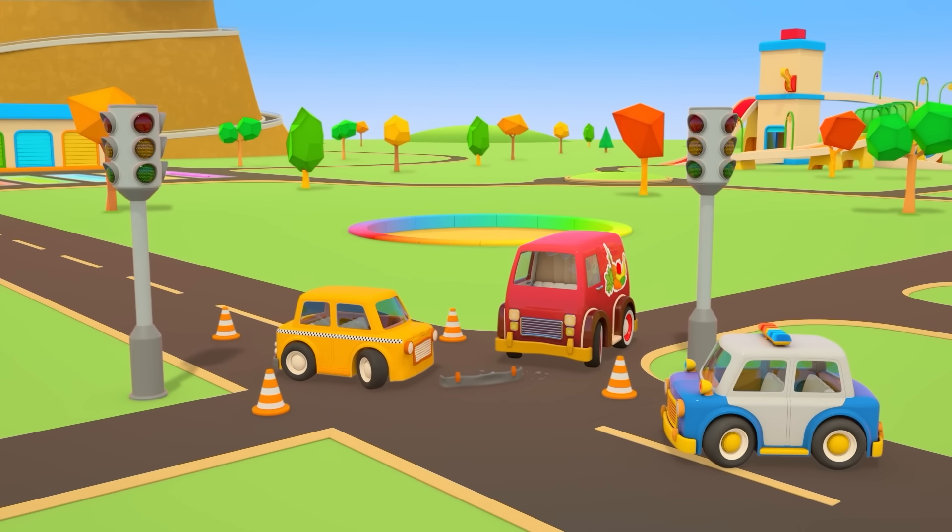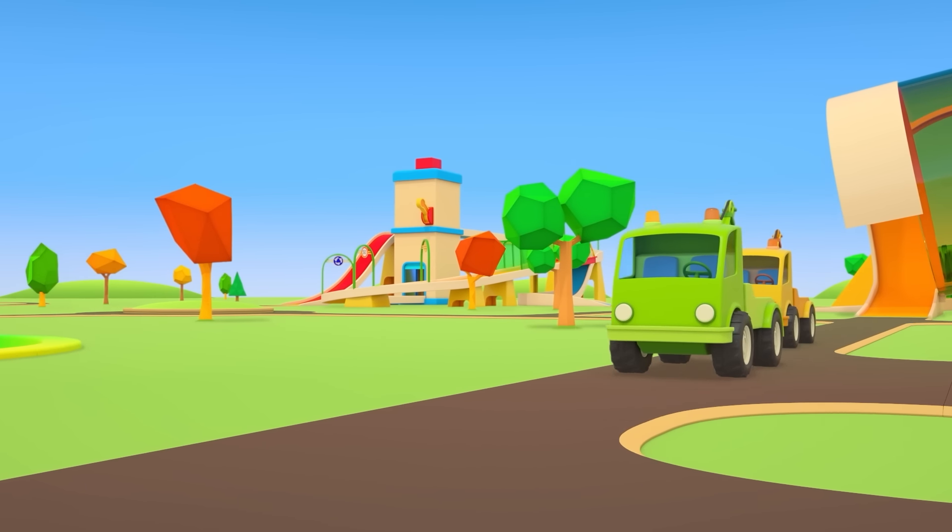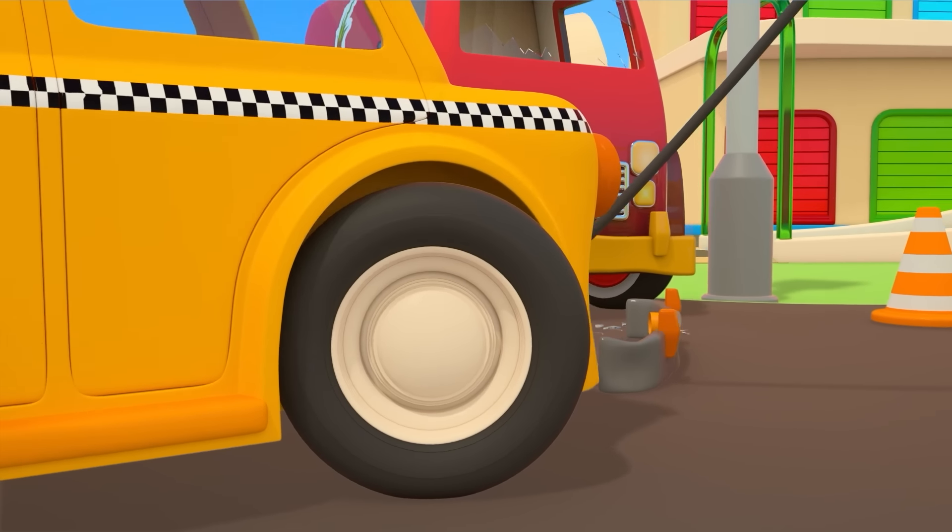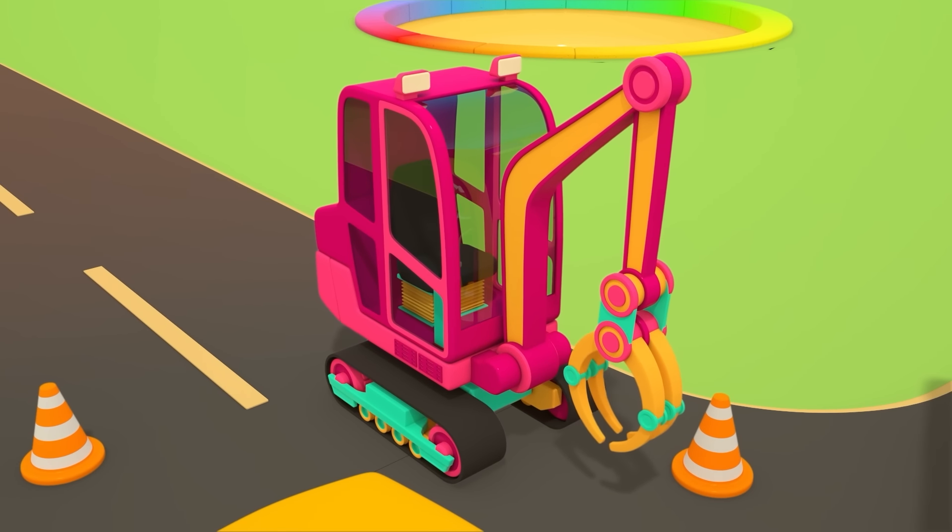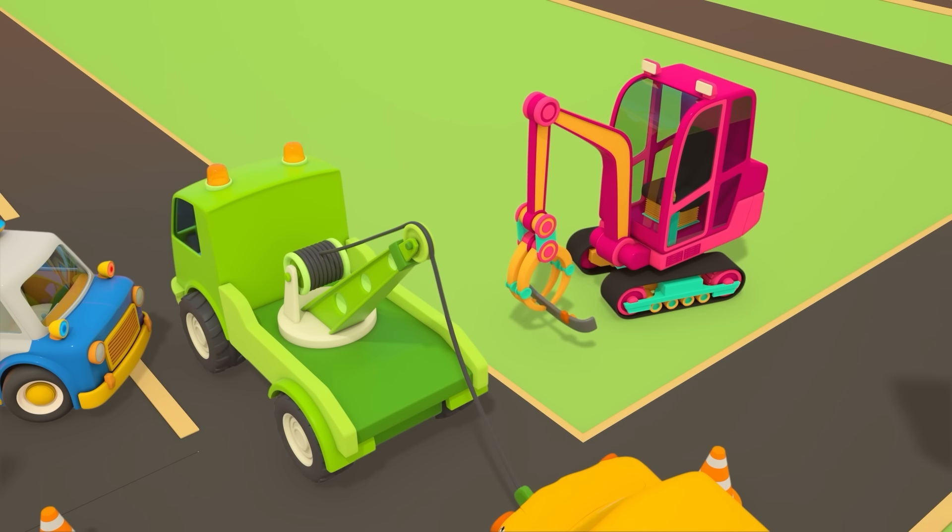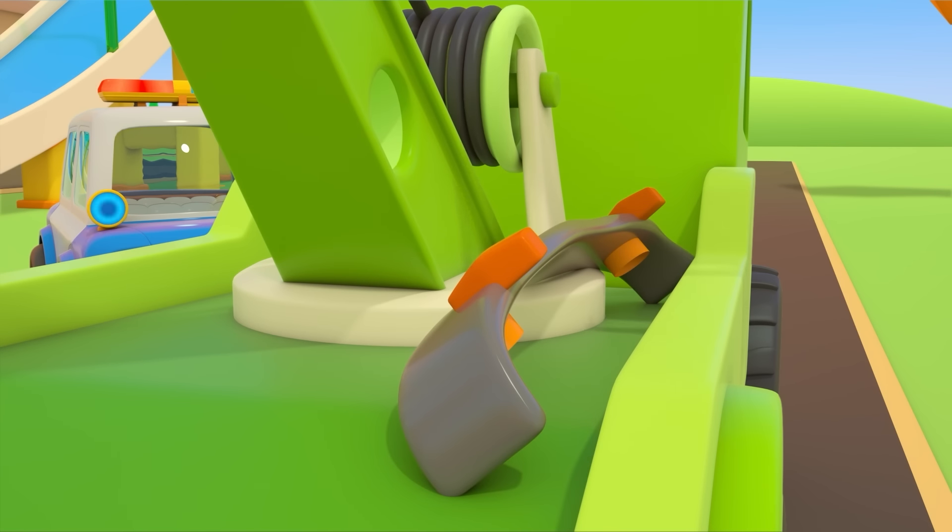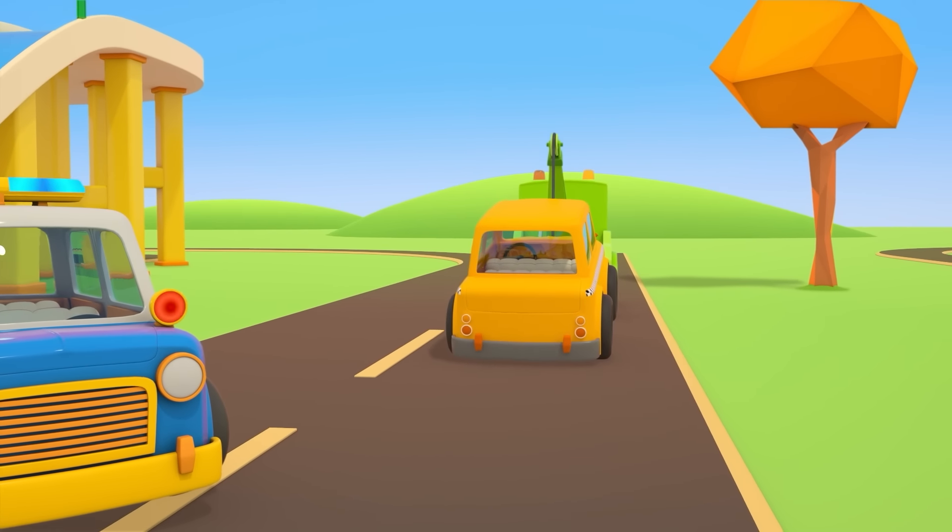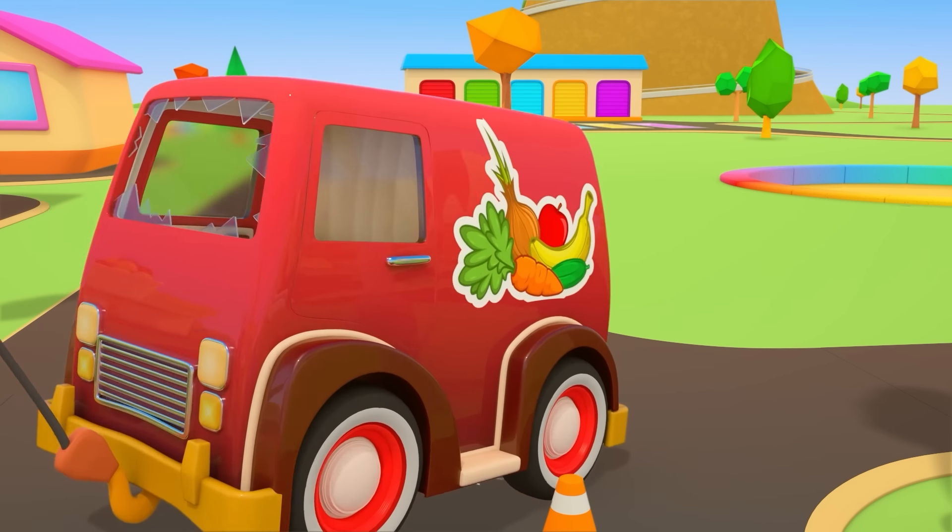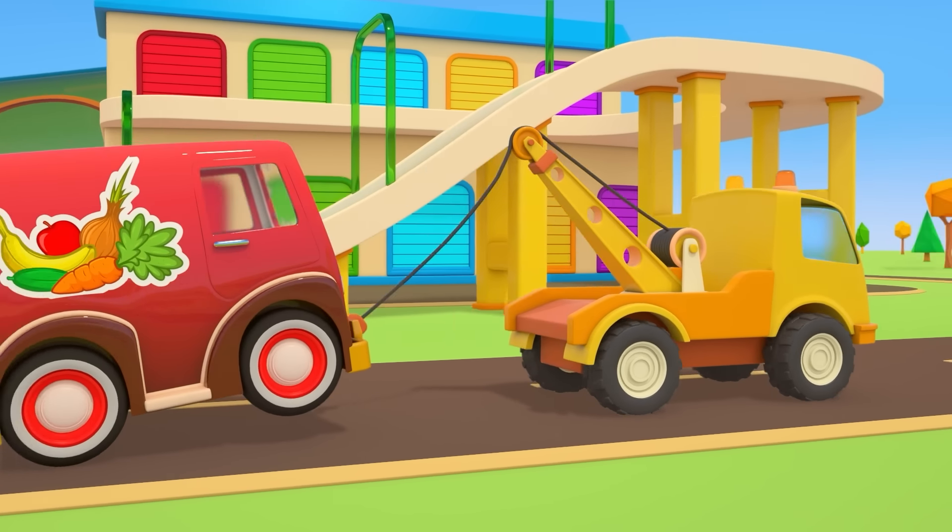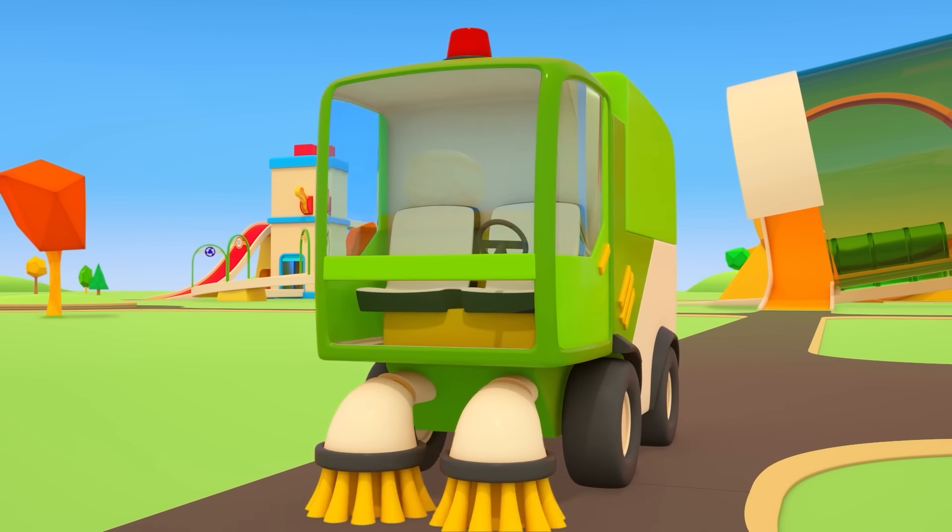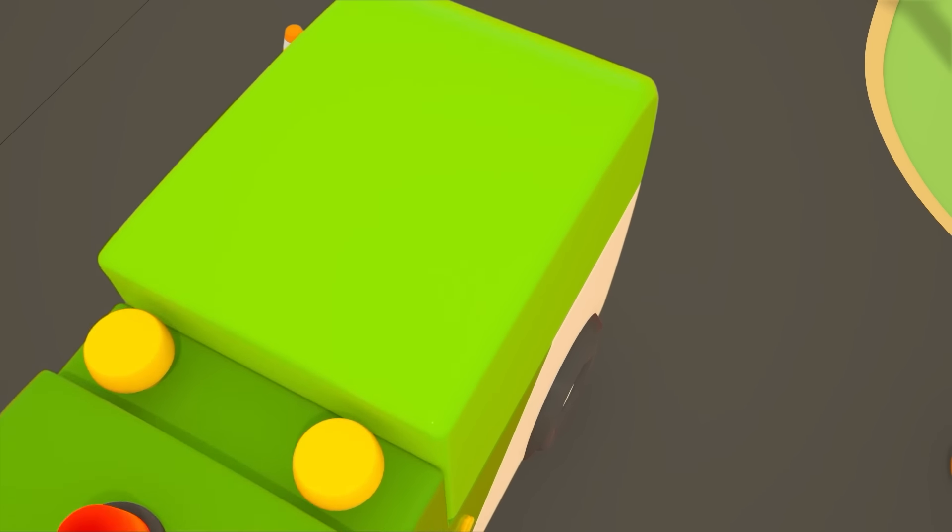There's been an accident at the crossroads. A taxi and a van carrying fruits and vegetables collided. We'll need two tow trucks here. The green tow truck lifts the taxi. The manipulator carefully picks up the bumper that the car lost and loads it onto the tow truck. The yellow tow truck will take the vegetable van to the repair shop. There's some broken glass left at the scene of the accident. The street sweeper is already on the way. The crossroads are all clear.